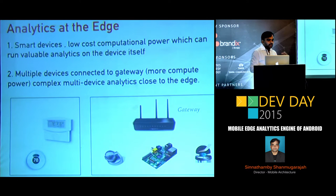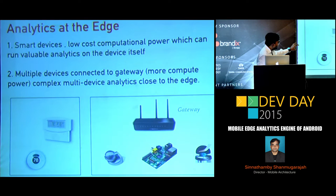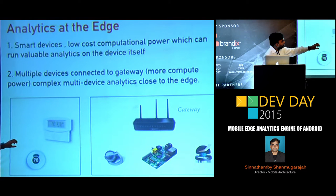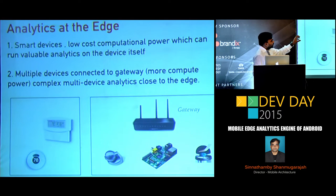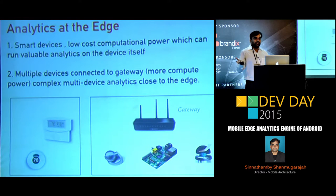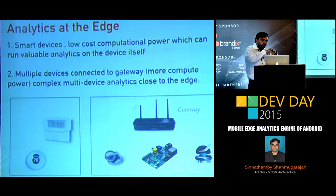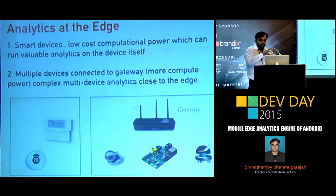The solution is edge analytics: doing analysis at the edge before data goes to the internet. You filter noisy data at the edge before it reaches the cloud. It's a distributed approach — simple analytics on the device itself, more complex processing at the gateway, and heavy lifting at the back-end cloud. This offloads the network and data centers by creating a model that scales.